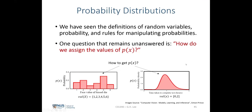So far we have seen the definition of random variables, probabilities, and the rules for manipulating the probability. But one question remains unanswered: how do we assign the values of the probability distributions?